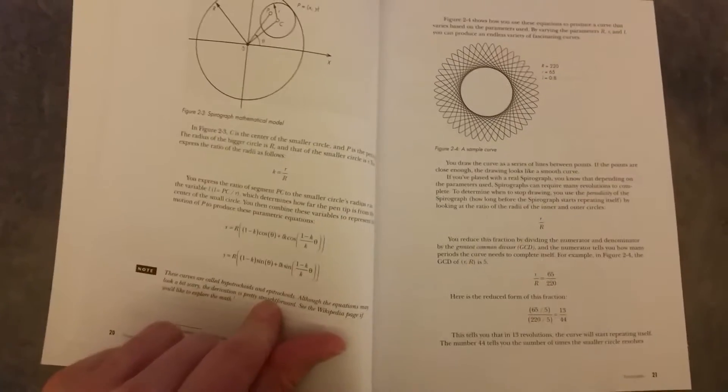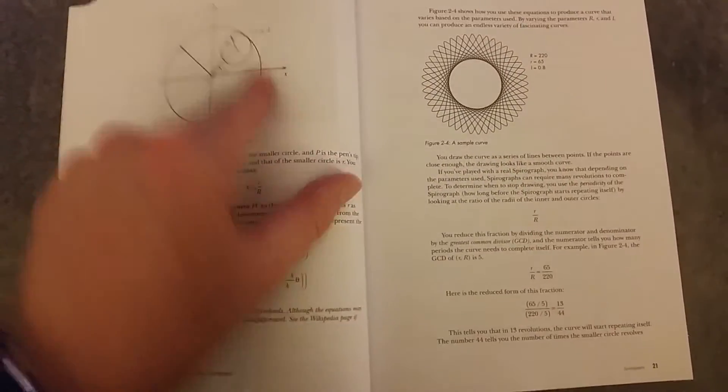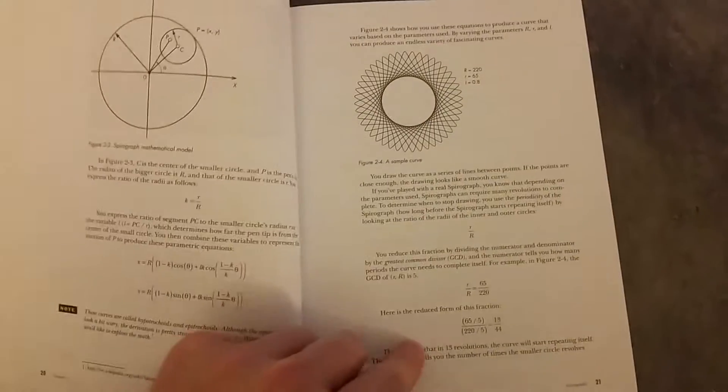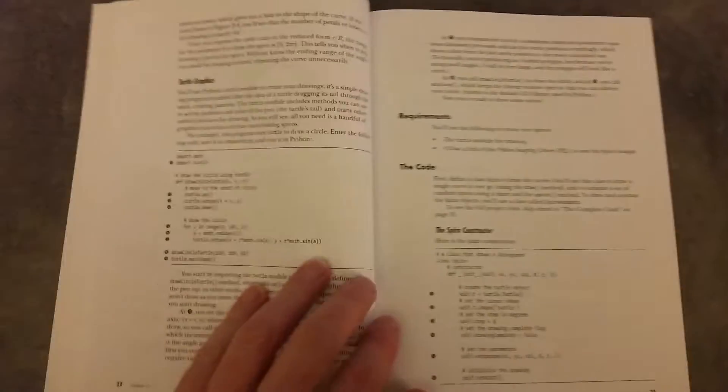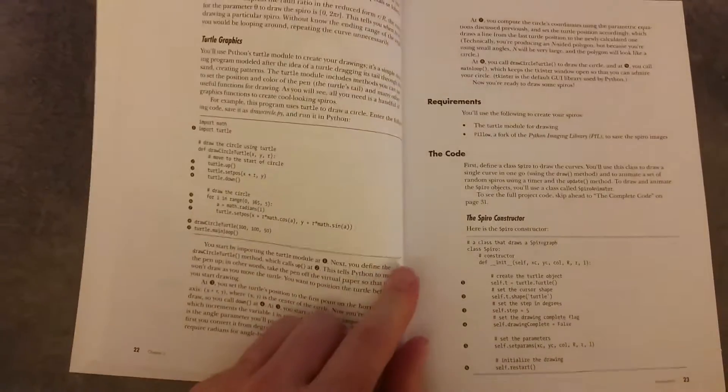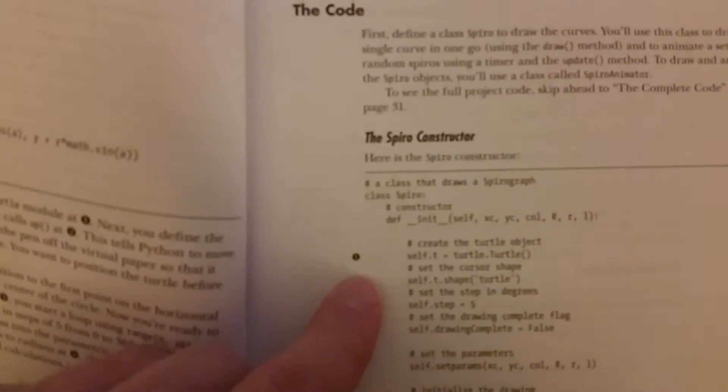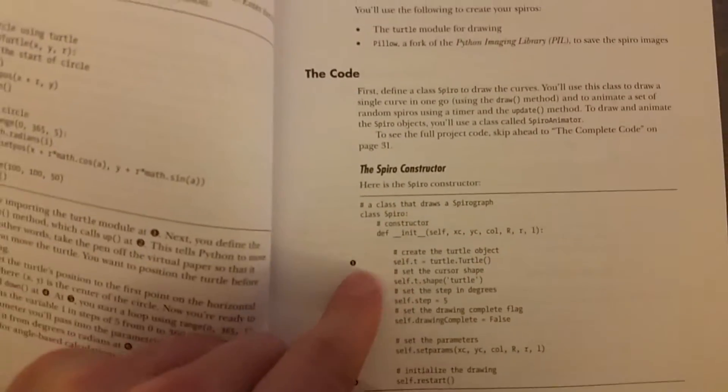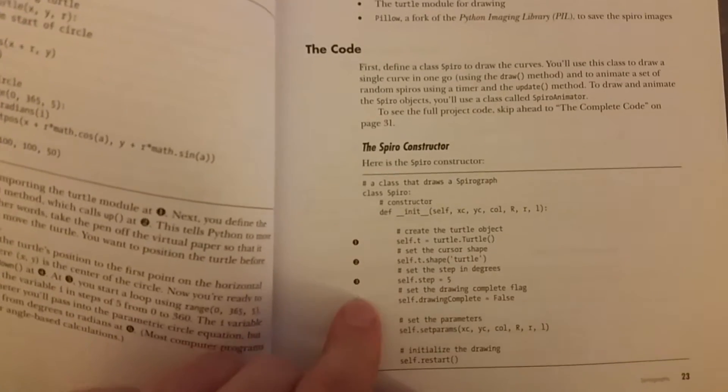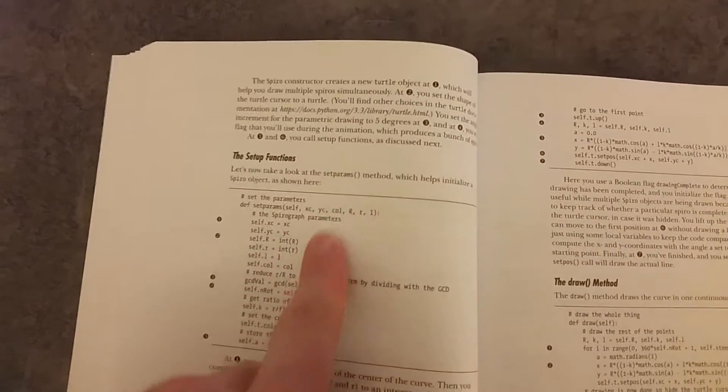And then it explains more of the equations on how you draw these smaller circles. And then, as always, it starts with the code. So how do you transform the maths into code? And again, I like this in the NoStarch books. It writes the code and then it has these points here where it explains exactly what's going on in the code.